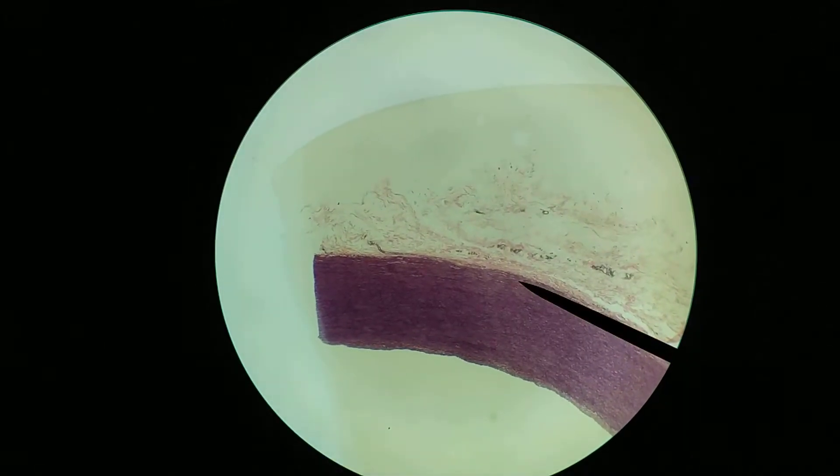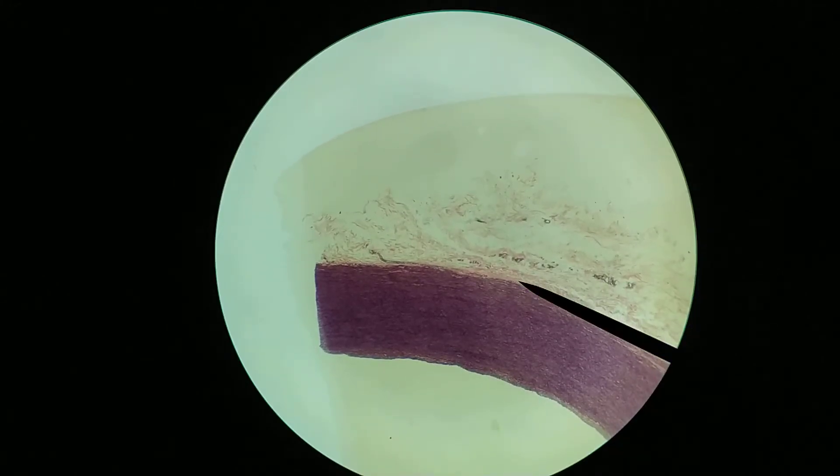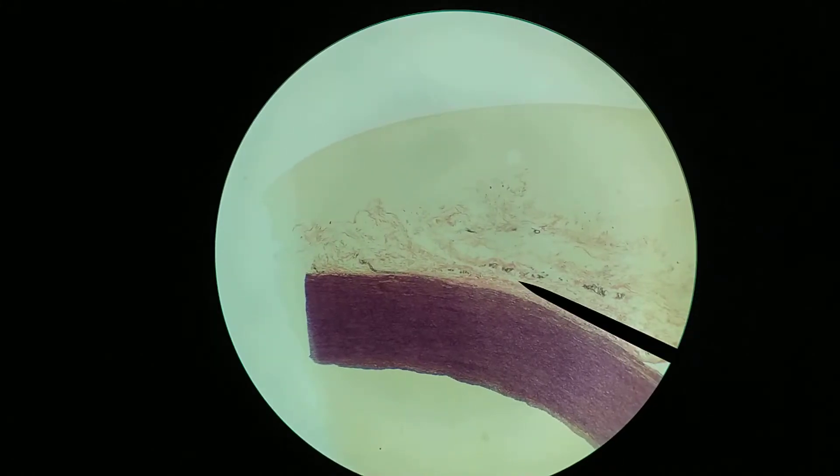This area right there is where you have a much more typical, dense, irregular connective tissue in the tunica adventitia. We'll look at that in some detail in a moment.